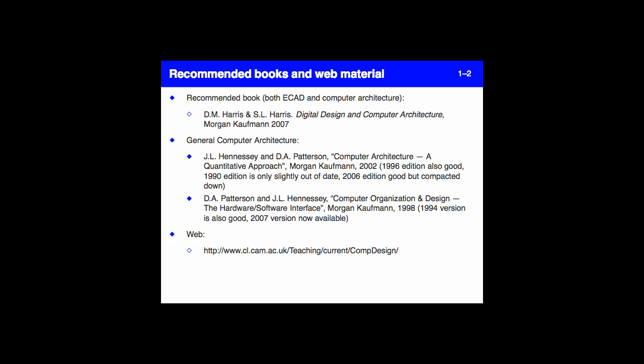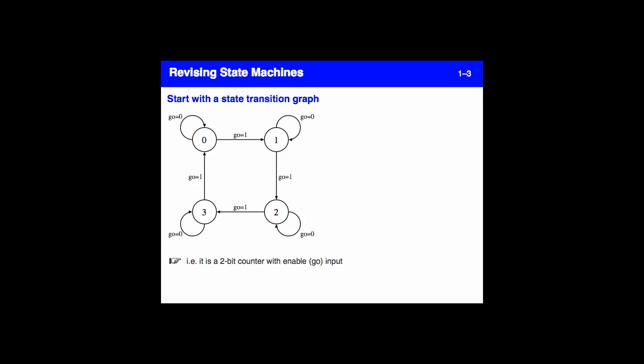Now the transition to a state diagram example happening in 3, 2, 1, now. State diagram. I think that's the end of this test.